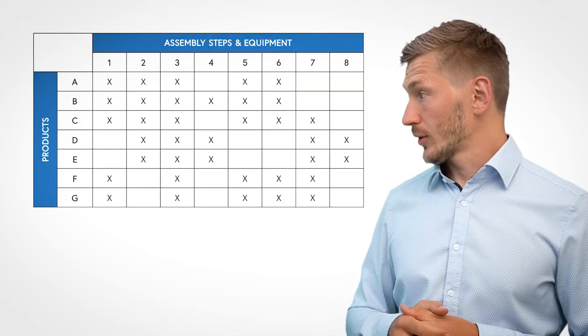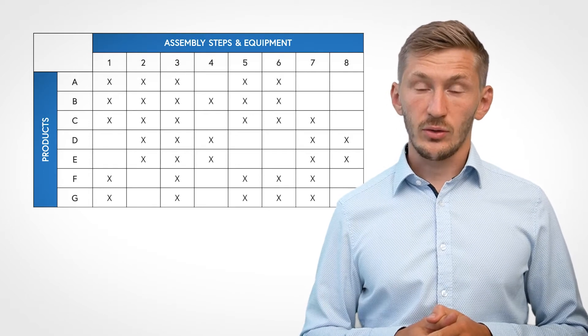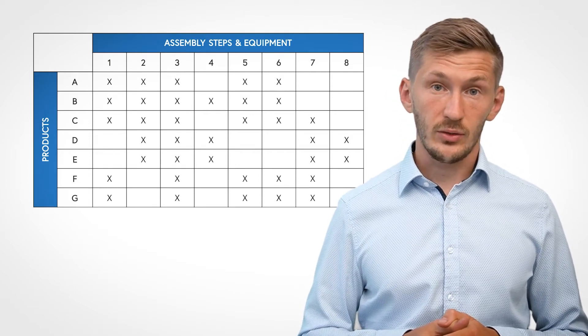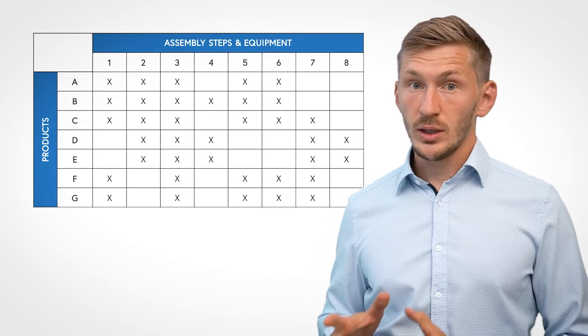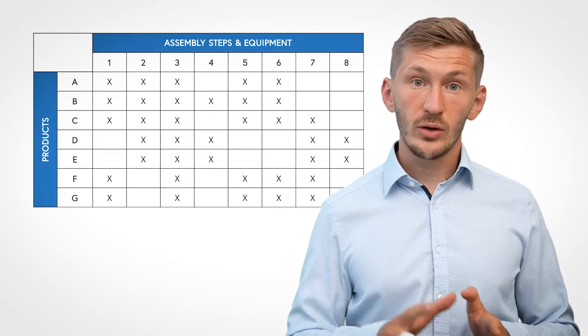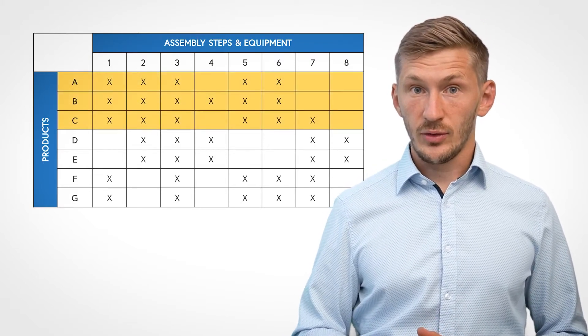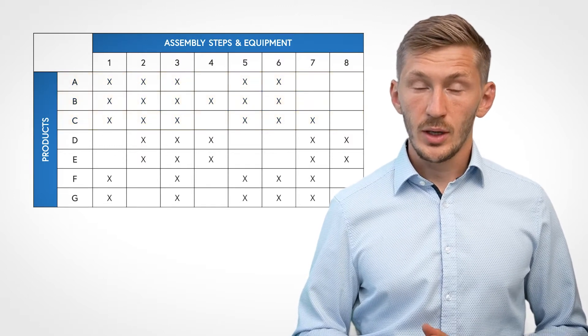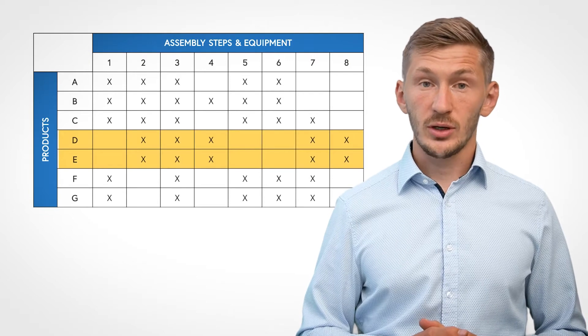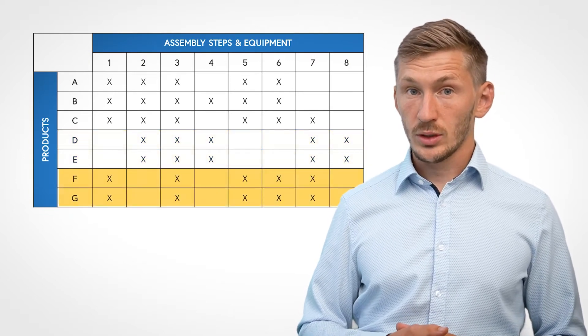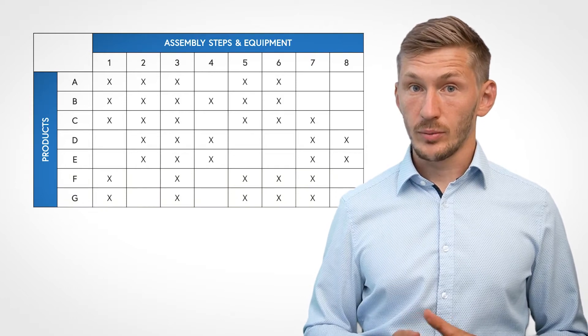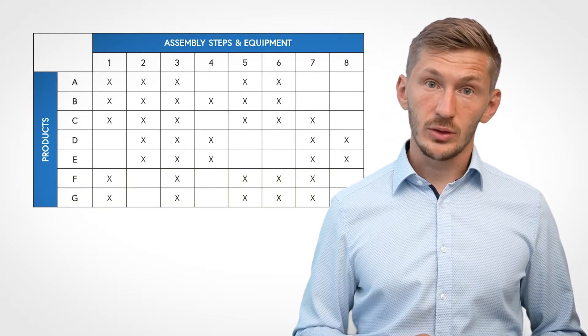In order to derive the product family, we look at the different products of the company and the assembly steps necessary to produce them. Looking at this matrix, we see on the x-axis the production steps and on the y-axis products A to G. Products A, B, and Z have similar assembly steps; products D and E have similar production steps; and F and G as well. We cluster these into three different product families.